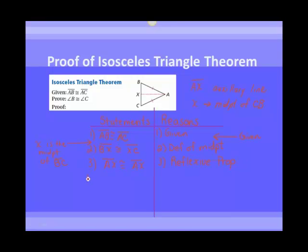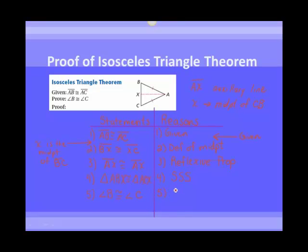Because AX is congruent to itself, that means triangle ABX is congruent to triangle ACX by side-side-side congruence. And where I'm going with this is: if I want to say that angle B is congruent to angle C, I want to use CPCTC. So angle B is congruent to angle C by CPCTC. What we've just proven is that in an isosceles triangle, the base angles are going to be congruent.